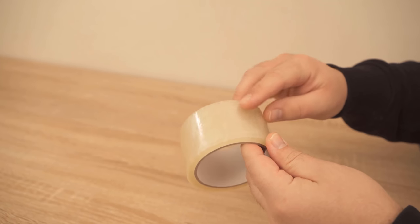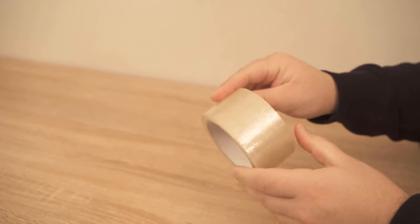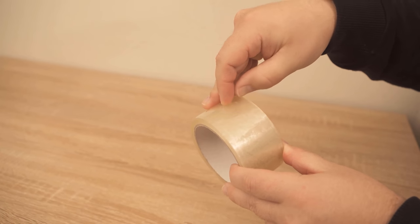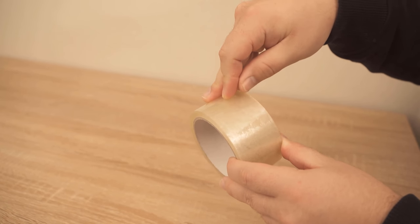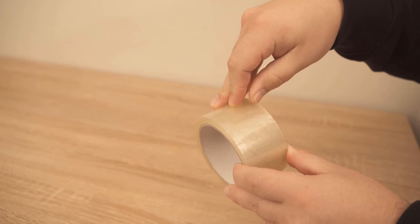When you take it out of the closet and want to wrap a package, you always have to find the beginning of this tape roll. That is, first look for the beginning, and then begins the annoying unwinding.